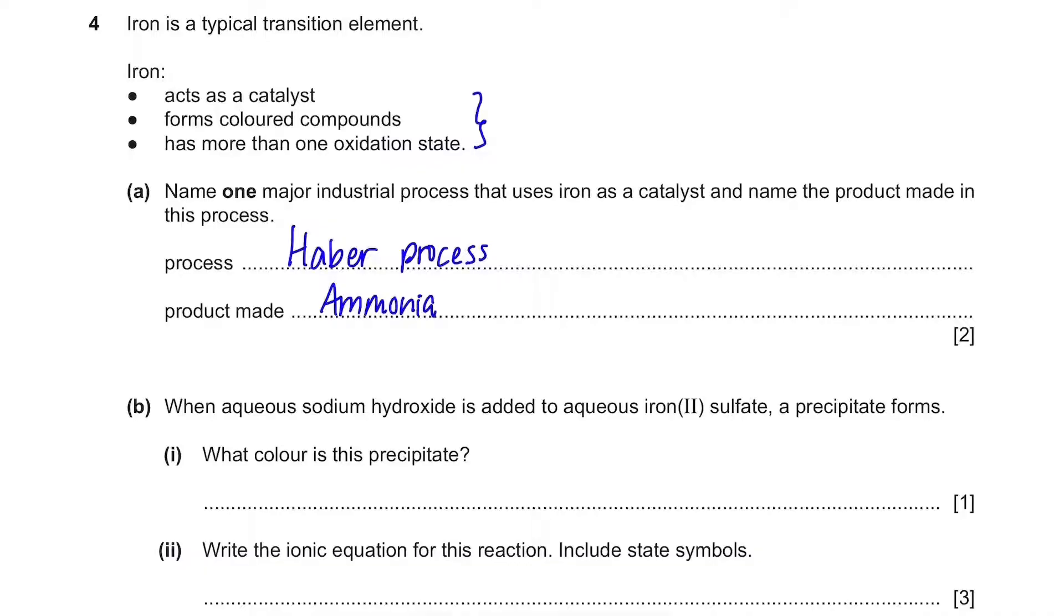Part B. When aqueous sodium hydroxide is added to aqueous iron sulfate, a precipitate forms. What color is this precipitate? So sodium hydroxide is made of Na+ and OH-, and aqueous iron sulfate is made of Fe2+ and SO42-. So when there is a precipitate formed, it's going to be made of Fe2+ and OH-. And the color of this is green. You have to just remember the color of these kind of popular precipitates.